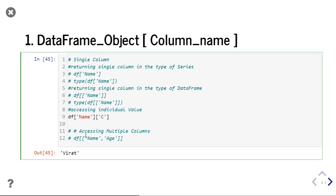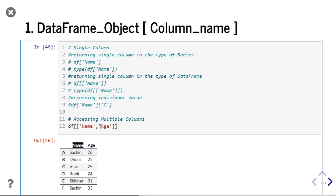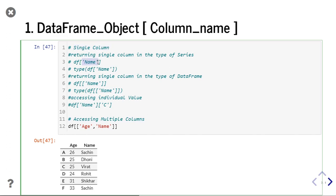Now we will try to access multiple columns. To access multiple columns, you will provide the list of columns inside the square bracket of df. If I run this, you can see it is returning two columns. You can change the order of these columns according to your need. These are the two ways inside the first type: you can access a single column and you can access multiple columns. If you pass it as a string it returns as a series type; if you pass it as a list it returns as a data frame type. You can also access individual values by providing the index value after the data frame column name.